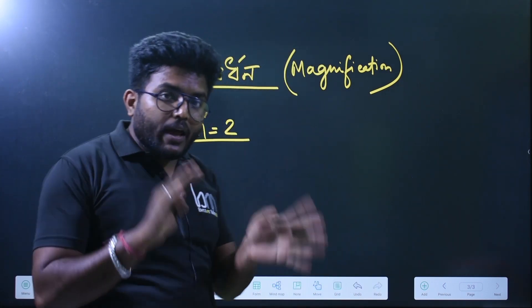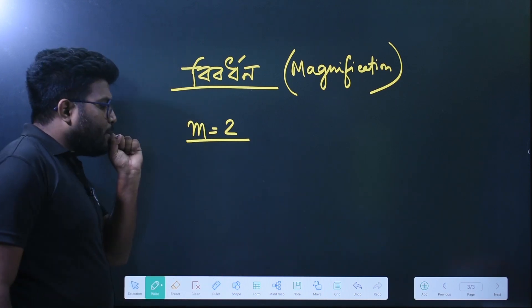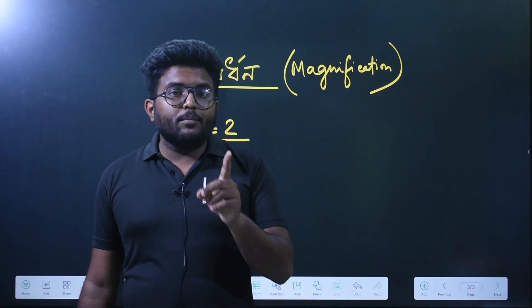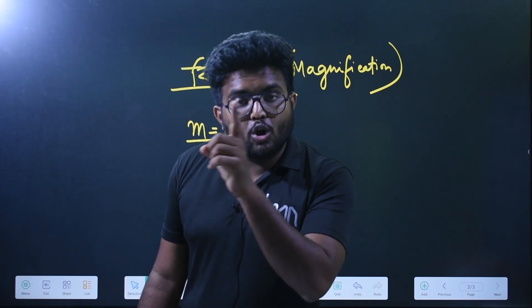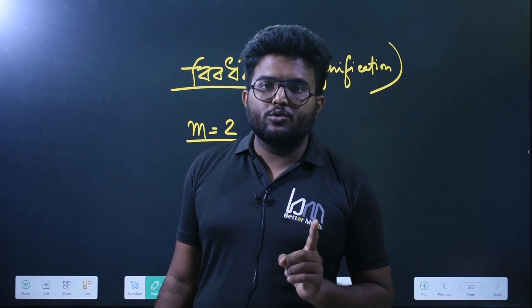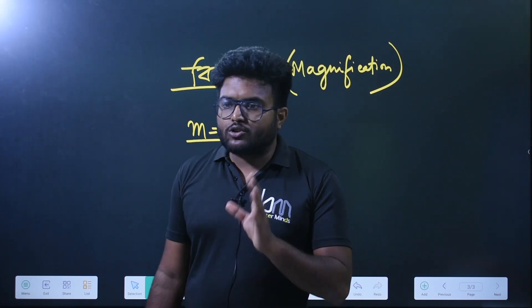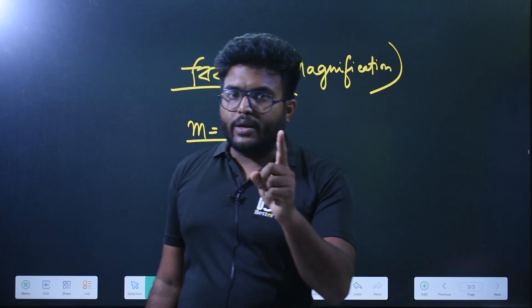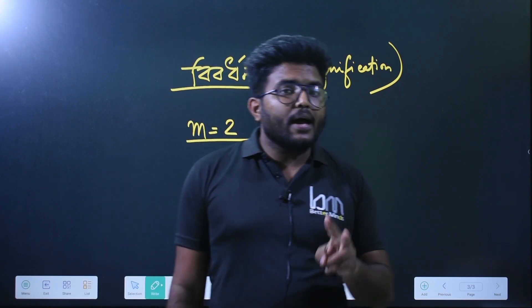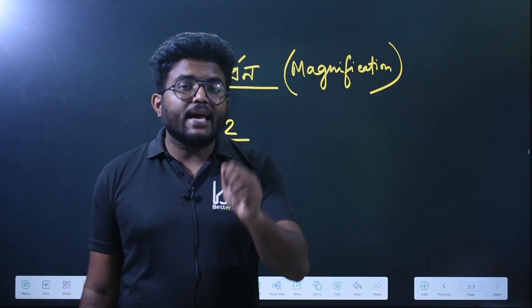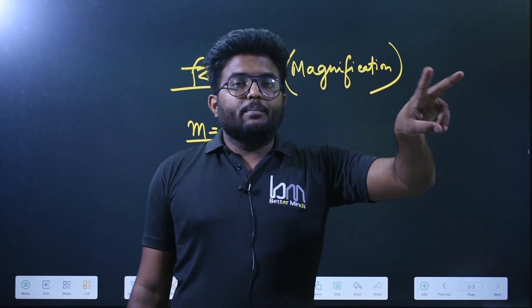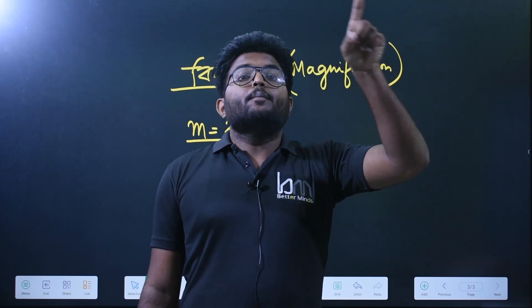It's the topic of magnification. What do we need to know about this topic? M is equal to 2 means the image is twice the size of the object.